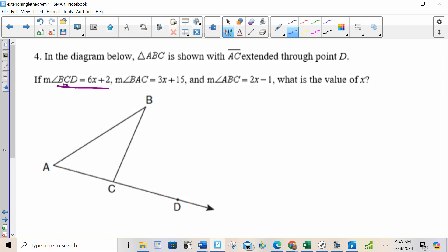BCD, that's angle C, is 6X plus 2. BAC, that's A, is 3X plus 15. And ABC, that's angle B, is 2X minus 1.